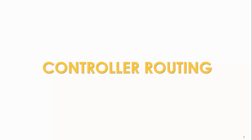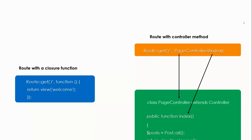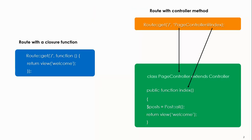Welcome back. Now we are going to look at controller routing. So far we have seen how you can route using a closure function, and this is the simplest way to define a route, where a route is mapped to a specific path with a closure. Now we are going to pass all that HTTP request to a controller class, so we are going to create a controller and then direct Laravel to pass all HTTP requests to the method of that controller class.